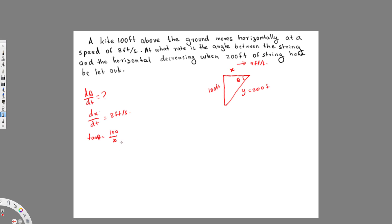Actually, let's use cot θ instead, since cot θ is the reciprocal of tan θ. So cot θ = X/100, which is much easier to differentiate. Taking the derivative of cot θ gives negative csc²θ.